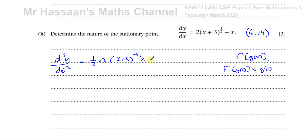This is the chain rule: if the inner function were 2x + 3 you'd multiply by 2; if it were x² + 3 you'd multiply by 2x. In this case the inner function is x + 3, which differentiates to 1. And differentiating minus x gives minus 1. So d²y/dx² = 1/√(x + 3) − 1.